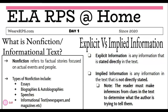In both fiction and non-fiction you'll come across information that is either explicit or implied. When making inferences it's very important that you know the difference between the two. Explicit information is any information that is stated directly in the text — it's right there. You don't have to ask any questions about it because the author tells you directly. Implied information, on the other hand, is any information in the text that is not directly stated — the reader has to use clues from the text and their background knowledge to determine what the author is trying to say. Using clues from the text plus your background knowledge means you're going to have to make an inference.